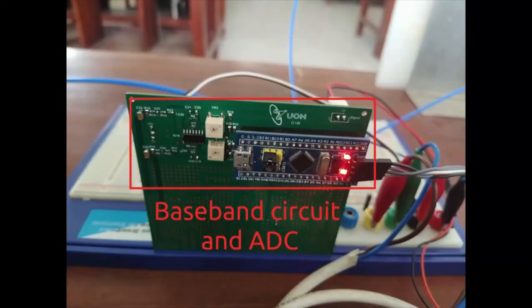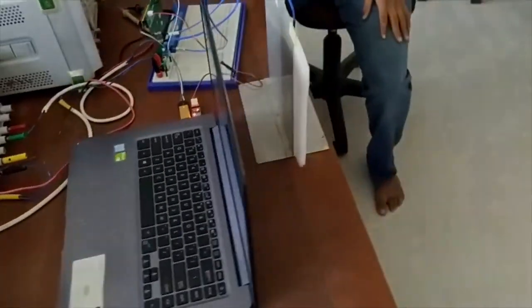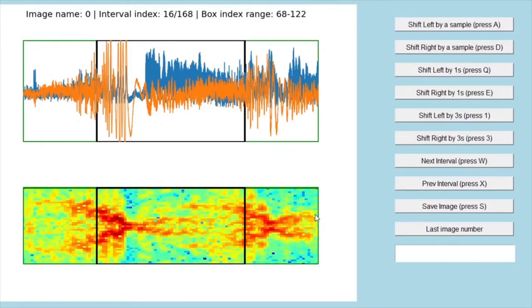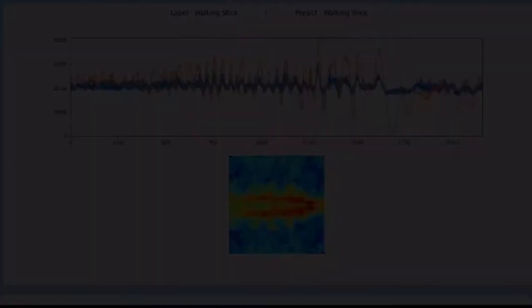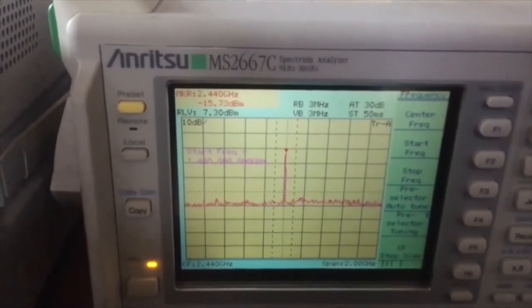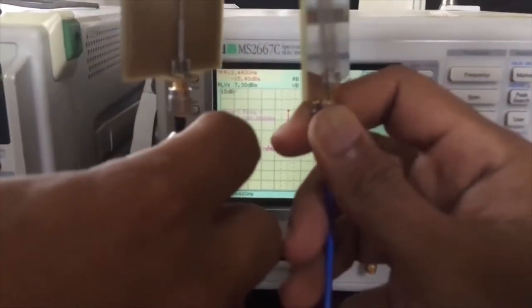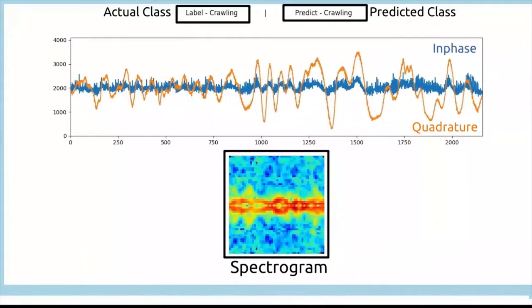We have also developed a software to recognize nine human motion classes in real time. Here you can see the operation of patch antennas in the 2.45 gigahertz ISM band, where the signal strength is varying with the distance between them.